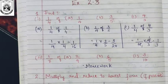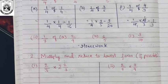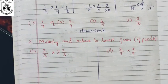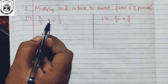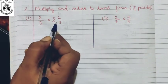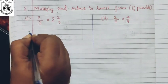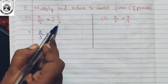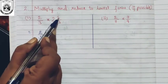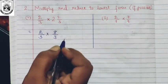Let us solve the second question: multiply and reduce to the lowest form if possible. In the first question we have a combination of a proper fraction and a mixed fraction. So let us convert this to an improper fraction. We have two upon three multiplied by — let us convert — three times six plus two will be eight upon three.